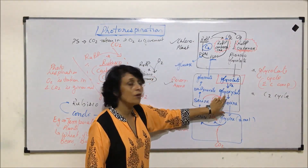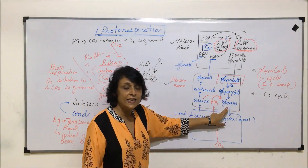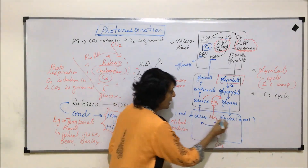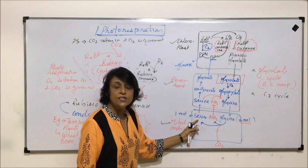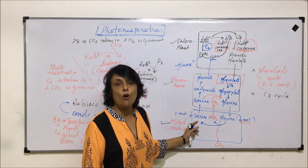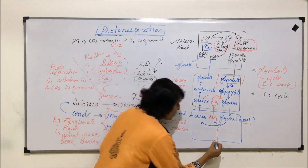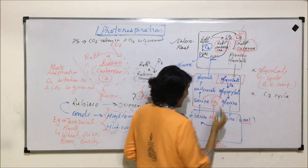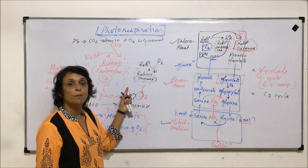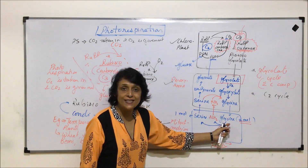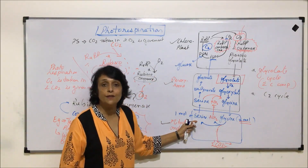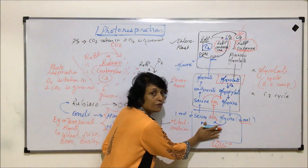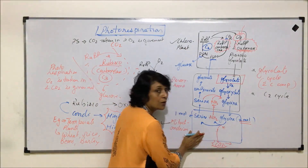Glycolate changes into glyoxylate, then into glycine by addition of an amino group. Glycine diffuses into mitochondria, and two molecules of glycine change into one molecule of serine with the loss of one carbon in the form of carbon dioxide. That means oxygen is taken in and carbon dioxide is given out. This reaction is very, very important because questions are most frequently asked about it.